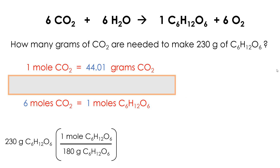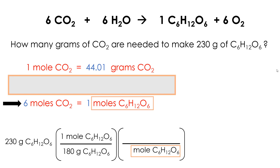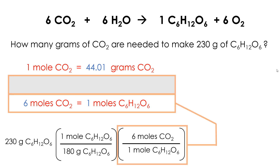I repeat the steps and need another conversion fraction. I figure out what goes on the bottom by looking at the previous unit and chemical — in this case it's moles of glucose. I need to match this with some fact I know. The first fact is about moles and grams of carbon dioxide — not helpful. But the third fact is about moles of carbon dioxide and moles of glucose — this matches. So I put the glucose half on the bottom and six moles of carbon dioxide on the top. Once I use it, I won't use it again.